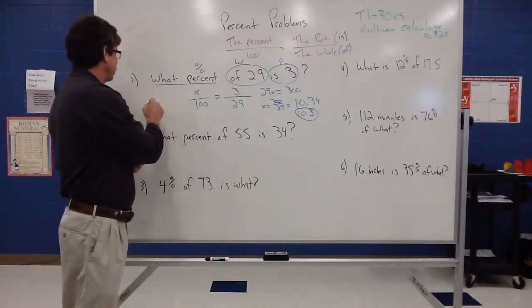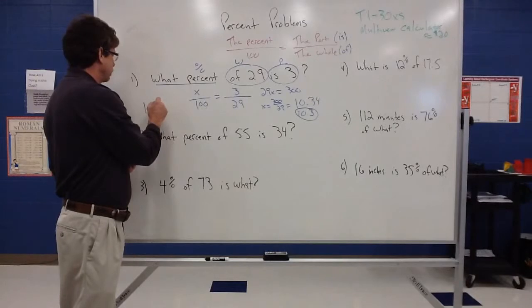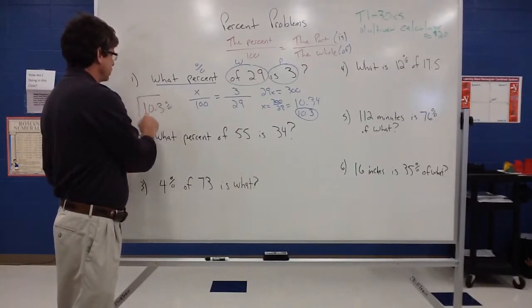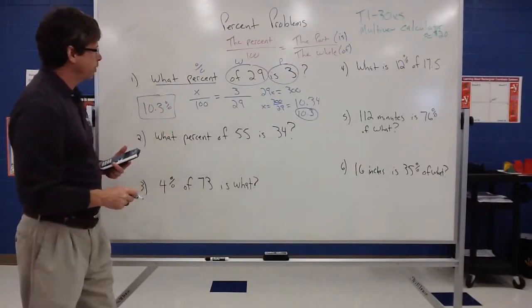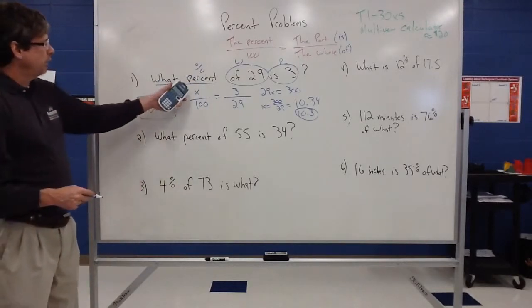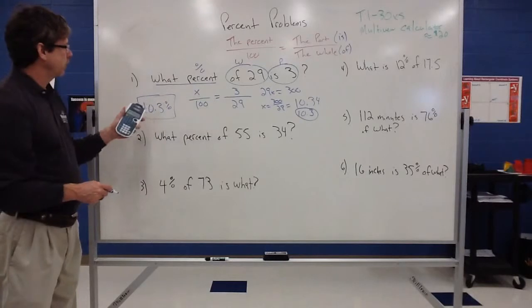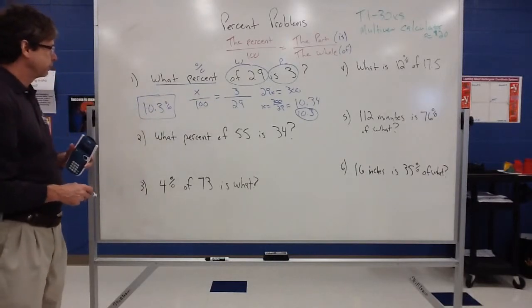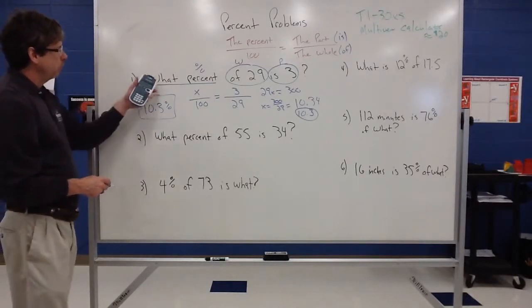So our answer is going to end up being 10.3%, actually. So 10.3% would actually be our final answer because they're wanting us to express this as a percent, and 10.3 over 100 is the same thing as 10.3%. So we have to include the correct labels.